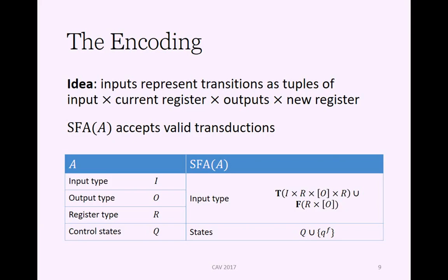Let's look at the encoding. The idea is that the inputs will be tuples that represent the transition. For a normal transition where we're still getting inputs, the input tuple for the symbolic finite automaton will include an input component, the current register, then a list of outputs, and a new register value. The transitions are encoded in a way that the symbolic finite automaton accepts valid transitions.